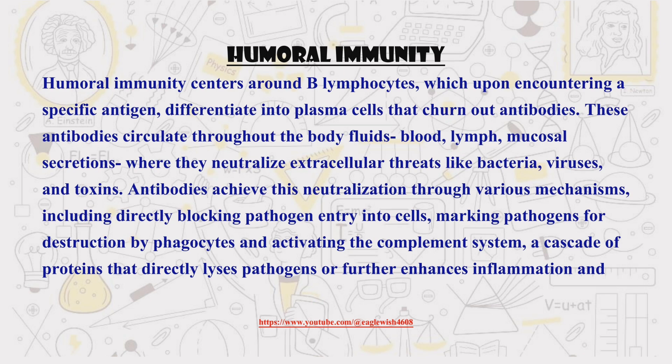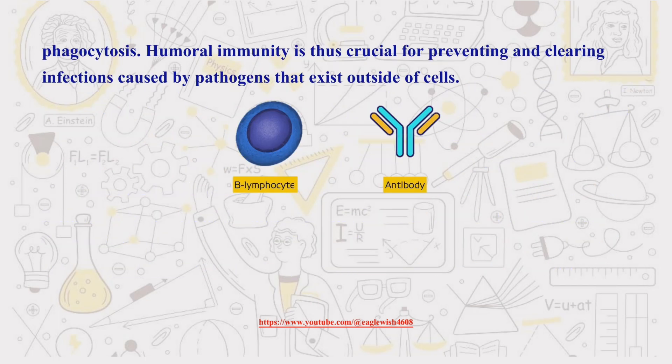First, let's examine adaptive immunity based on effector molecules: humoral immunity. Humoral immunity is like sending in a team of targeted missiles — those missiles are the antibodies. These antibodies are produced by B lymphocytes and roam through the bloodstream to identify extracellular pathogens.